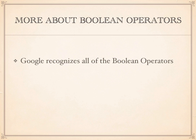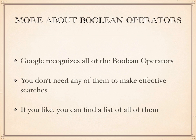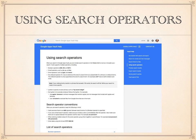If you're a technical person and want to use Boolean operators, you probably already know that Google recognizes all of them. If this doesn't mean anything to you, you can simply ignore the whole subject, because you do not need any of them to make effective searches. However, you can find a list of them by doing a Google search for 'using search operators' for a list of all the extra symbols and characters that can be used.